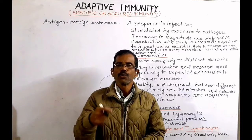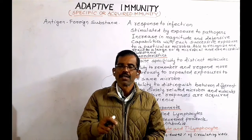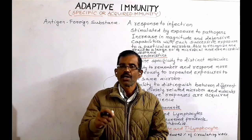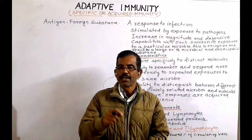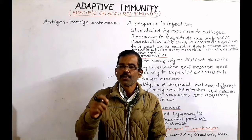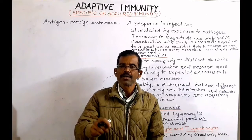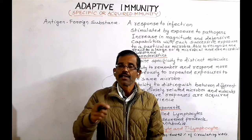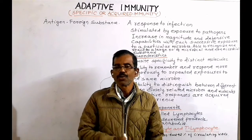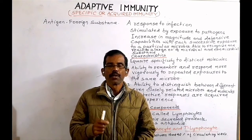This is because of immunological memory. That means when a person is infected by a particular pathogen for the second time, the adaptive immune response that develops during the second exposure is more vigorous and faster than the immune response that develops during first exposure.